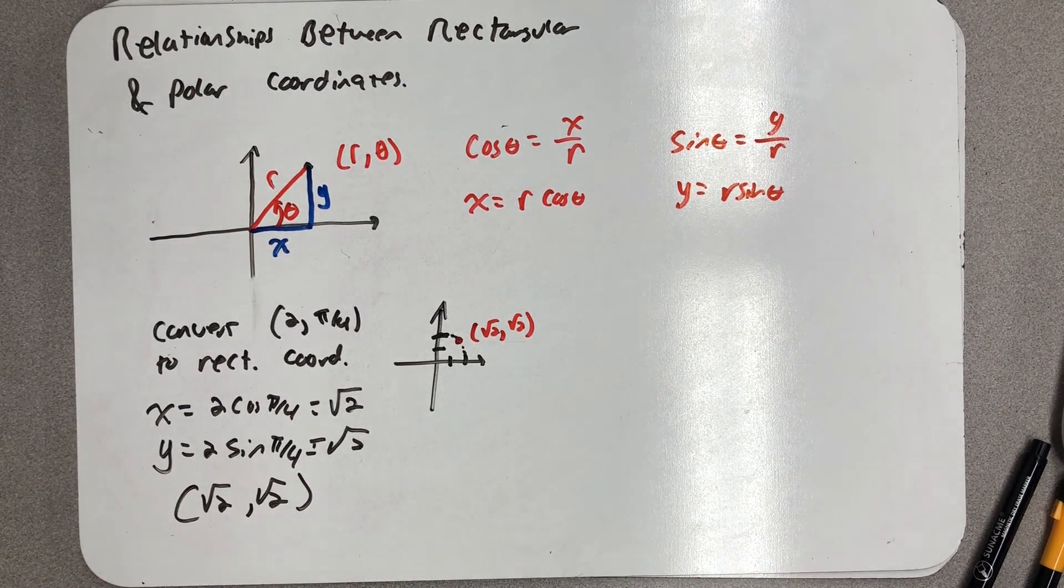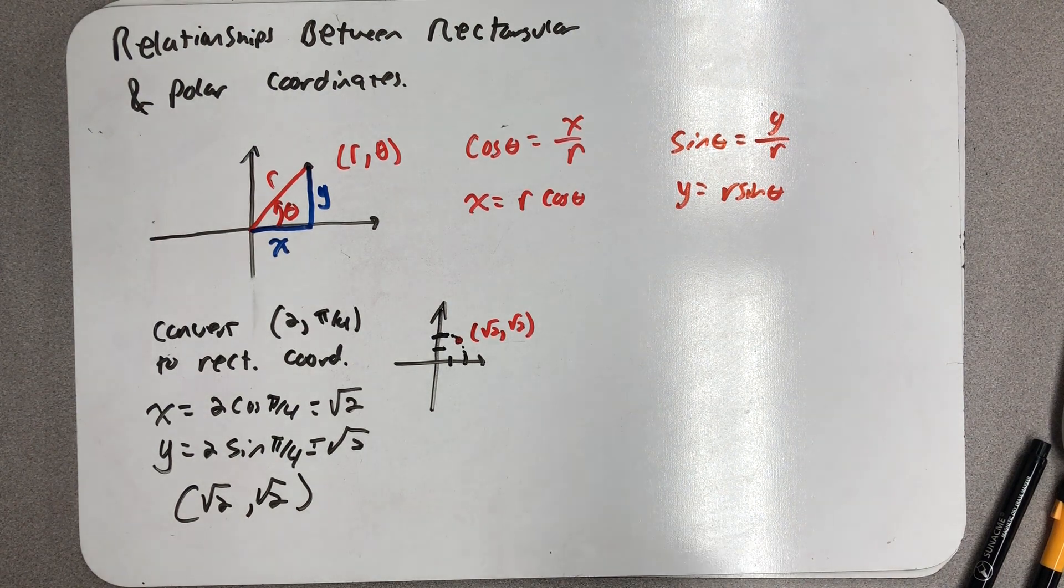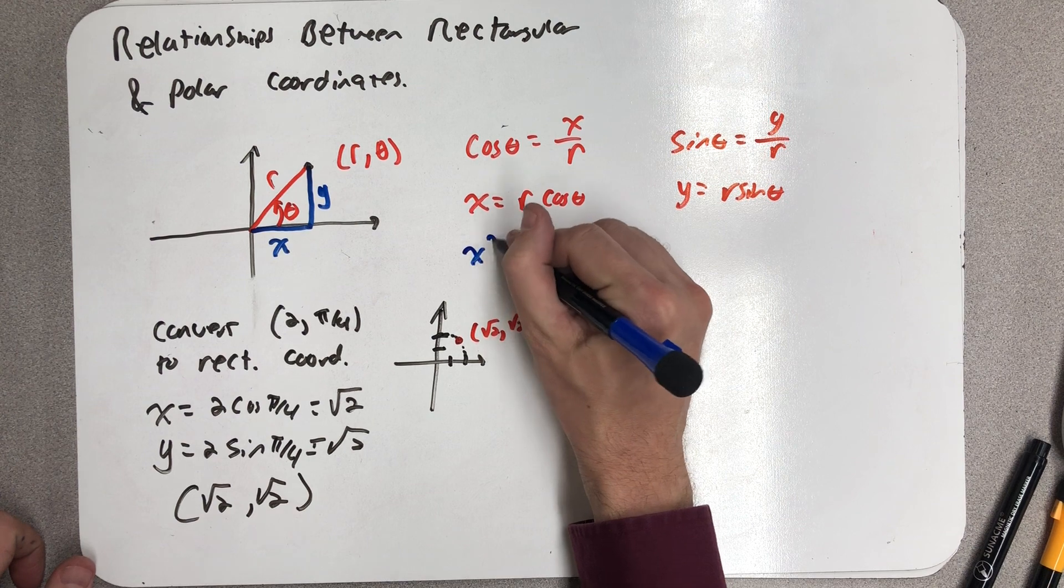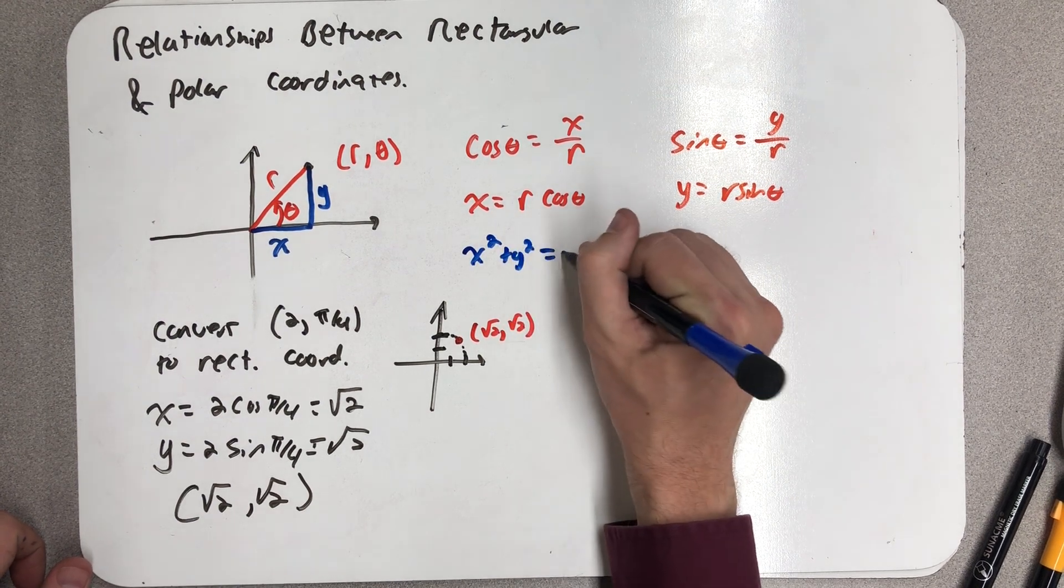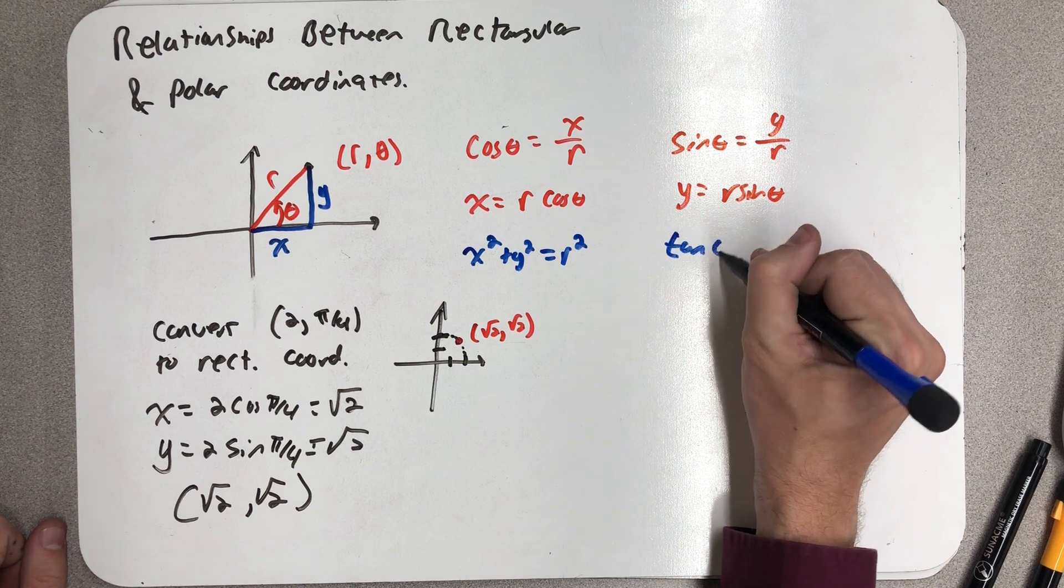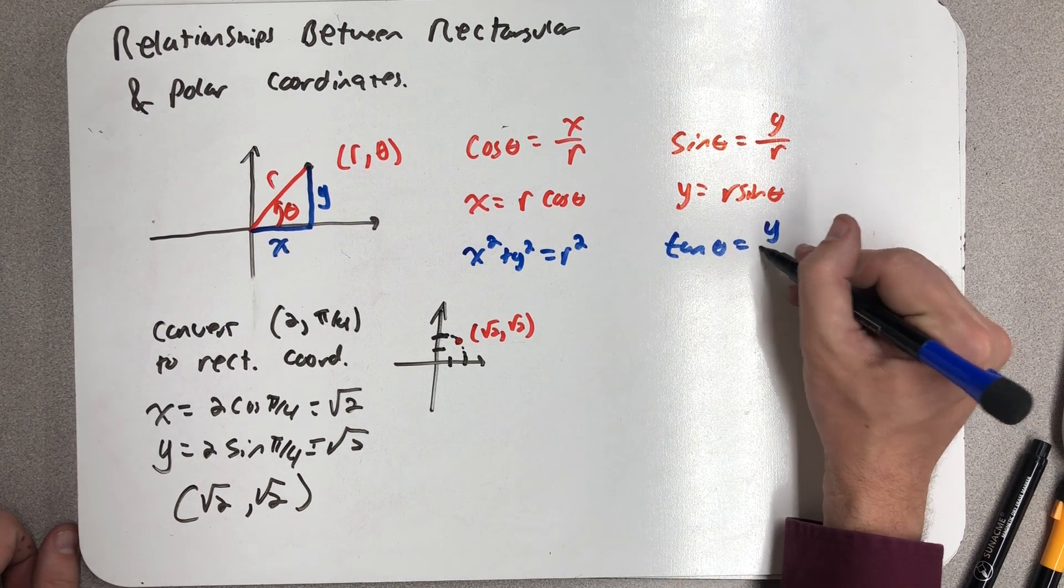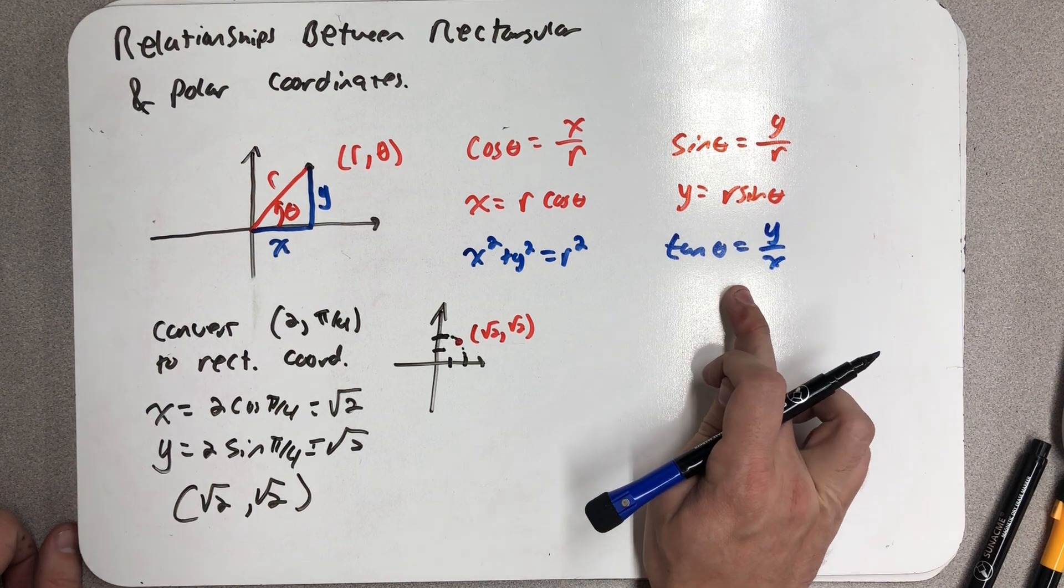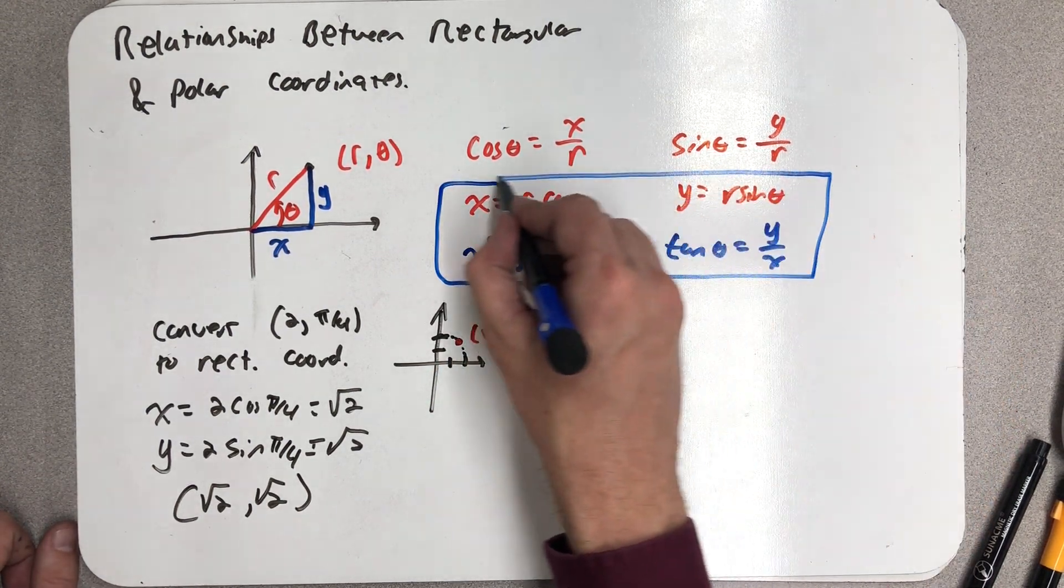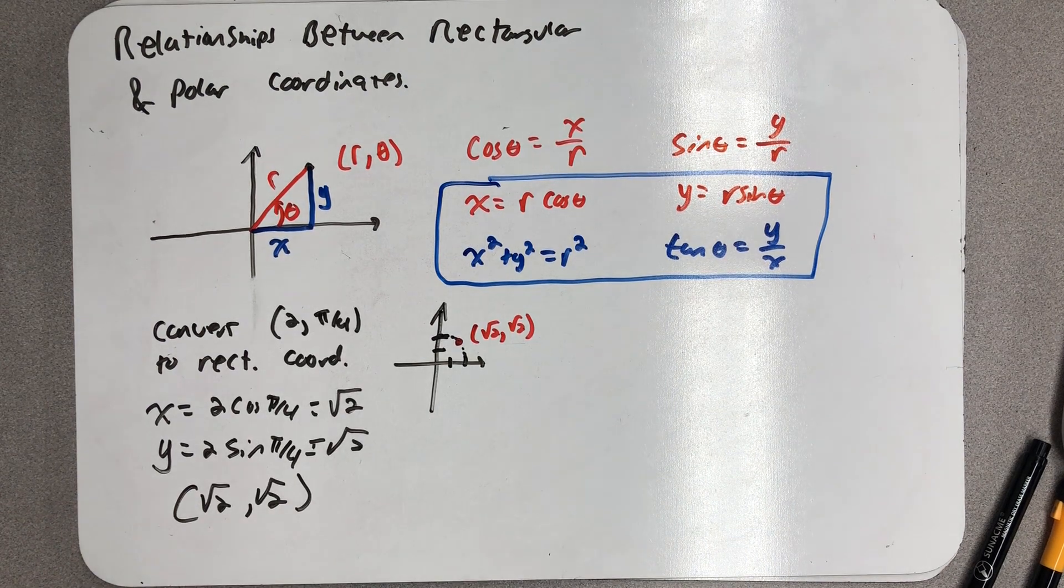So those are my first two relationships. There are two more I want to talk about. I could think about the Pythagorean theorem, which would tell me that x² + y² = r². Or I could think about tangent of my angle. Tangent θ is equal to y/x, and that's the definition of tangent, and those are the four relationships we need to convert between the two coordinate systems.